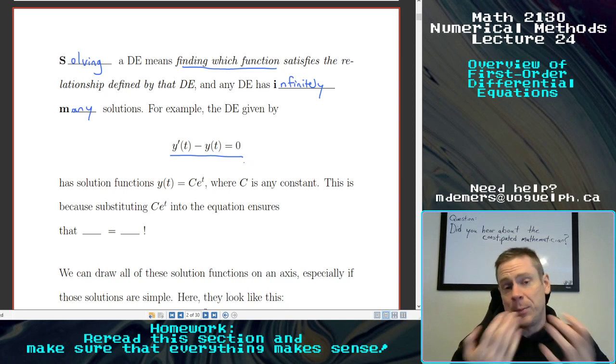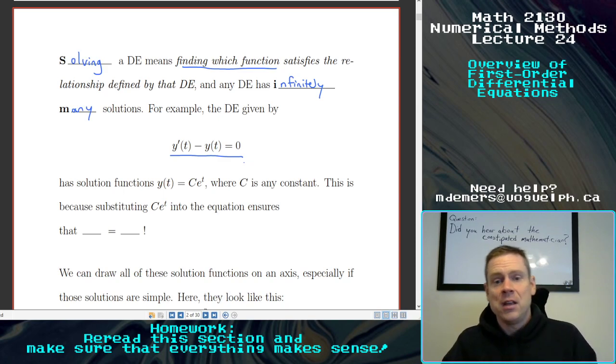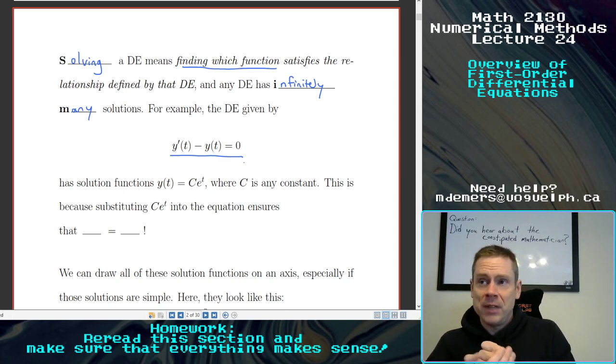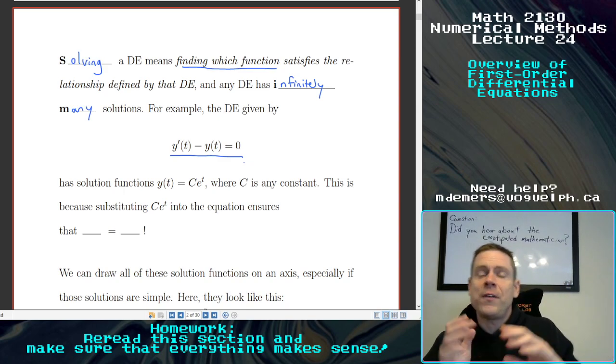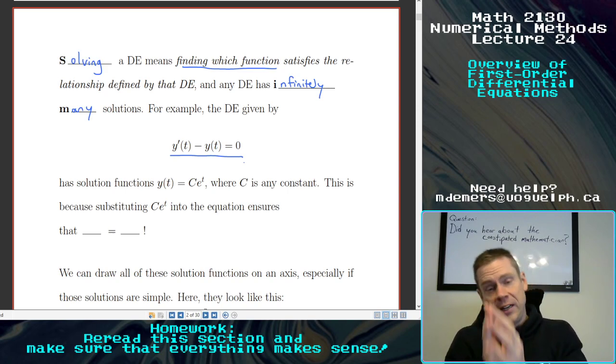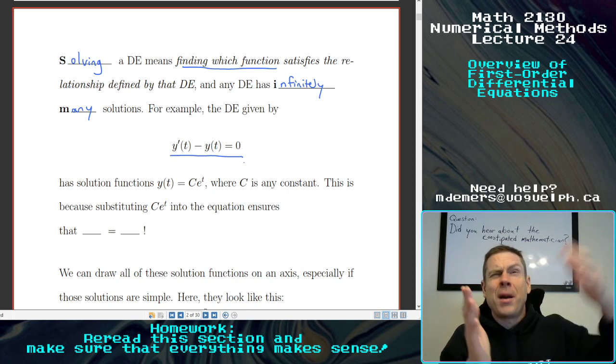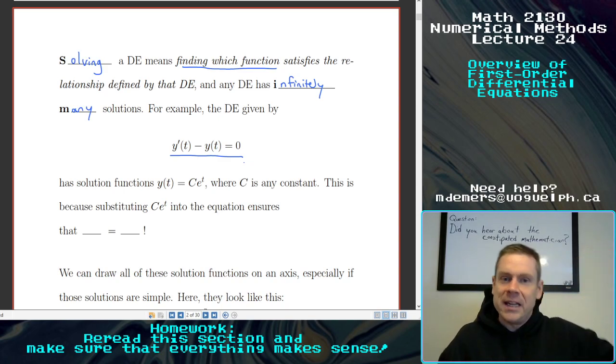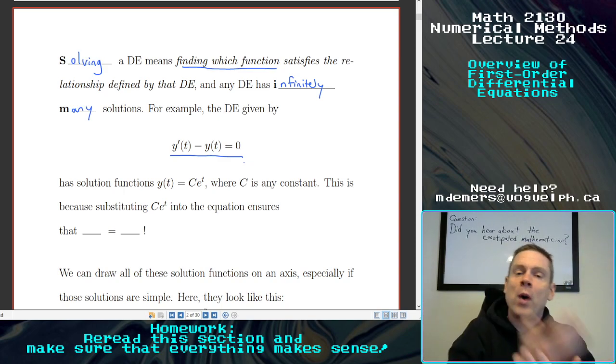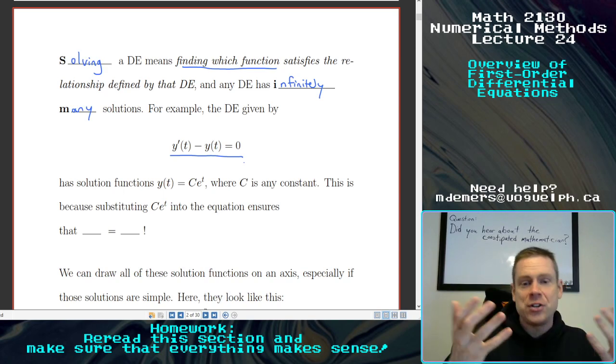And if you wanted to think about that, if my y of t was an exponential, like e to the t, the derivative of e to the t is e to the t. So if I were to substitute in y equals e to the t, then y prime is also e to the t, and I would get e to the t minus e to the t equals the zero function all the time. So y equals e to the t is a solution to this thing.